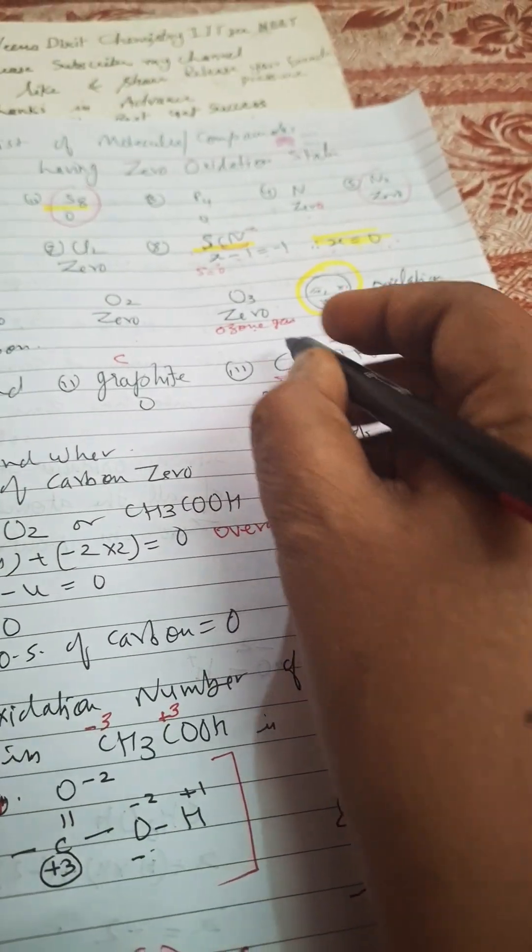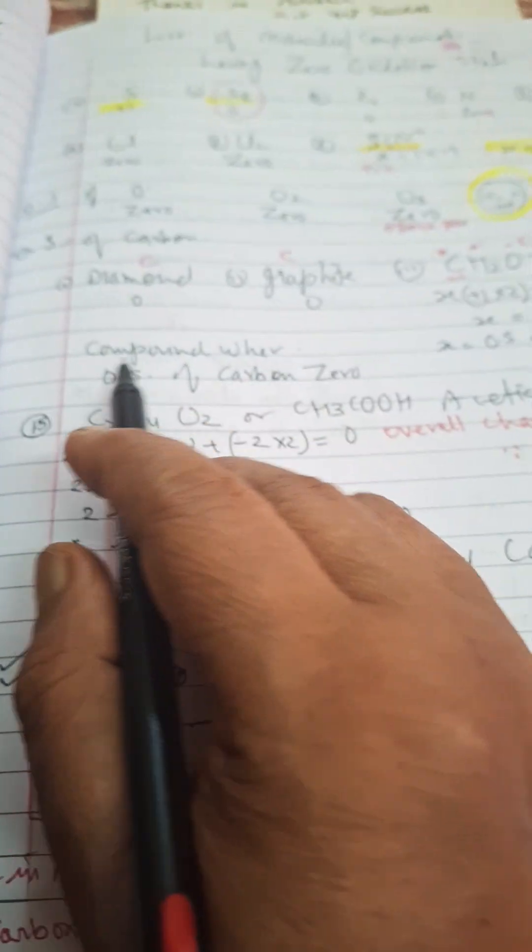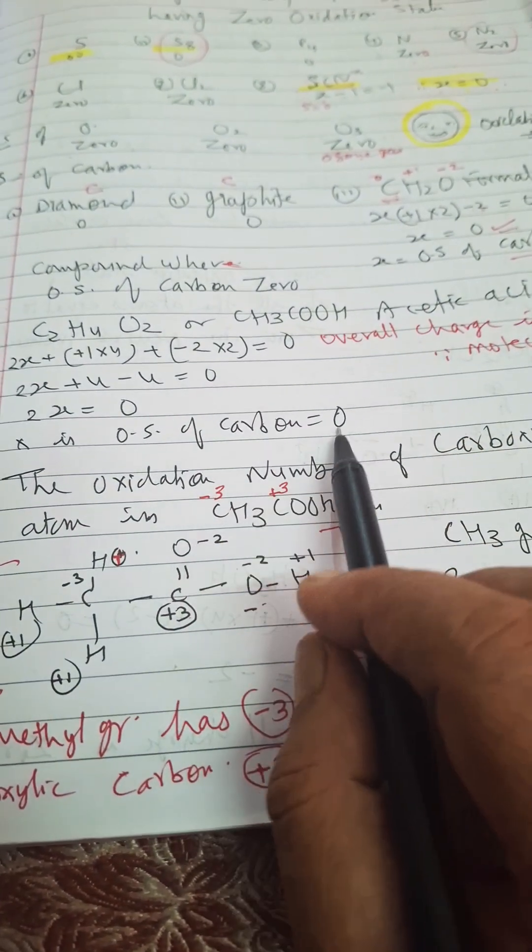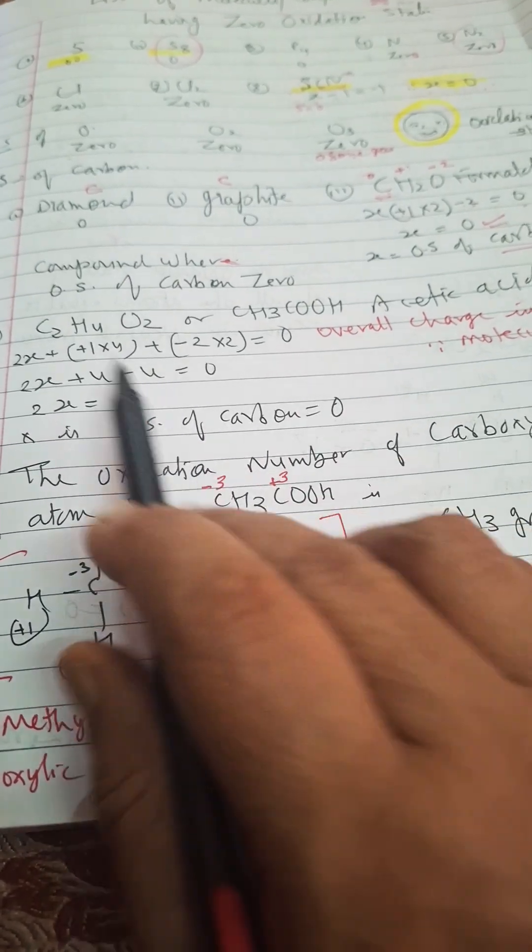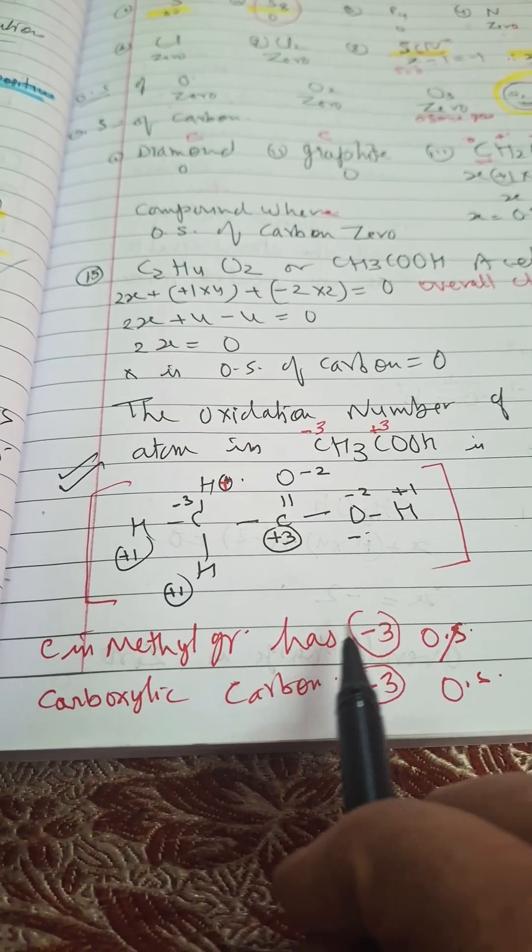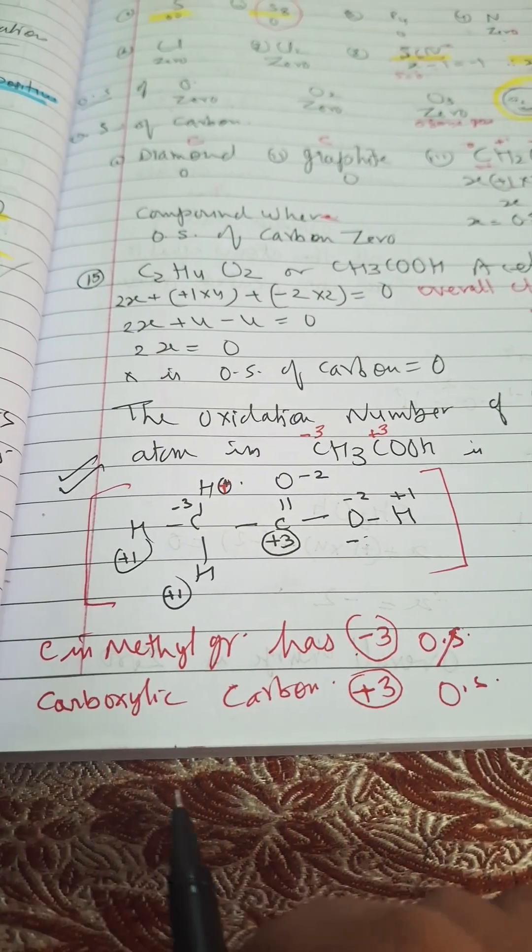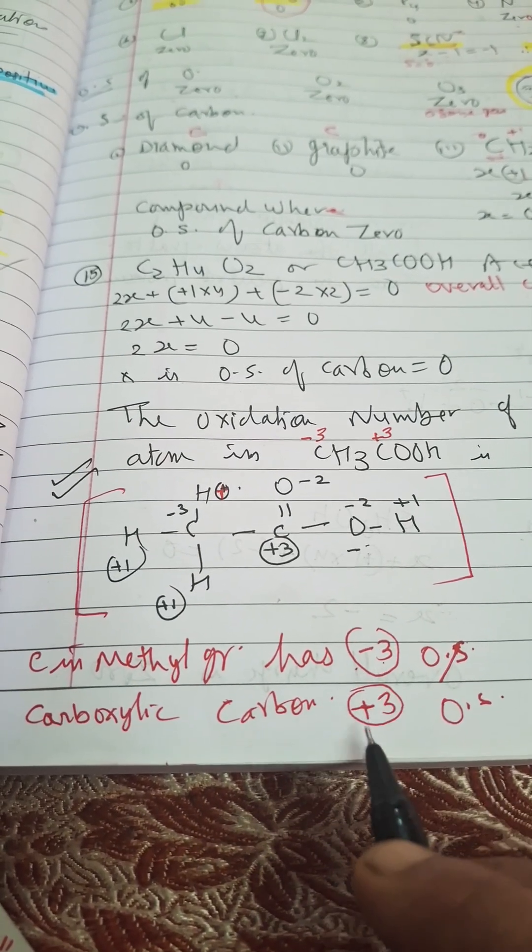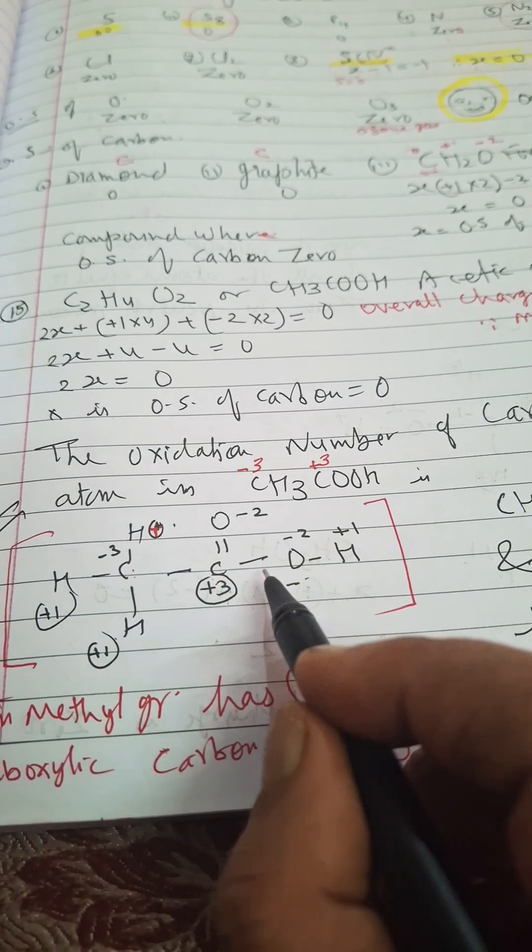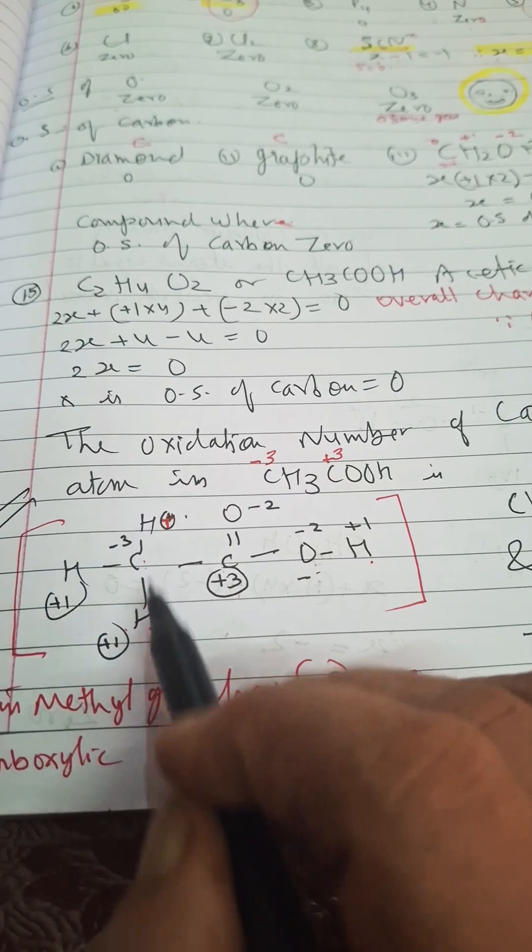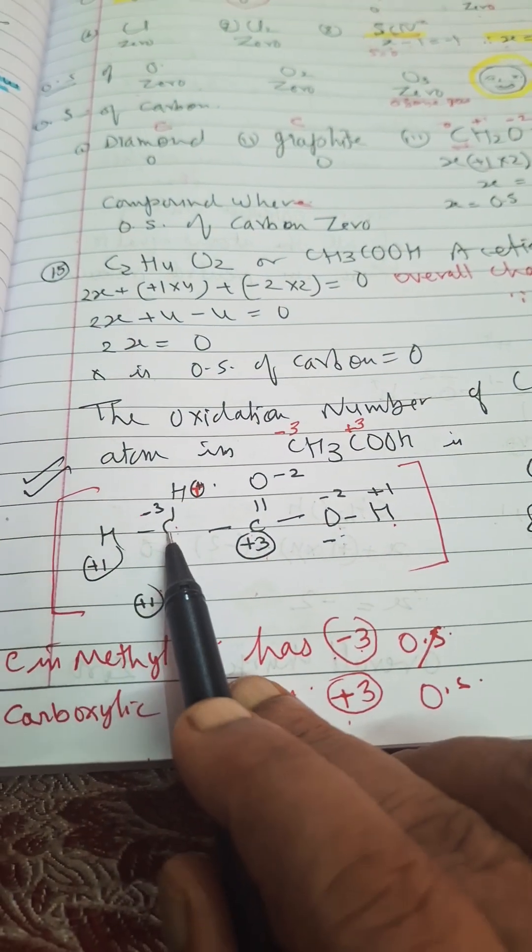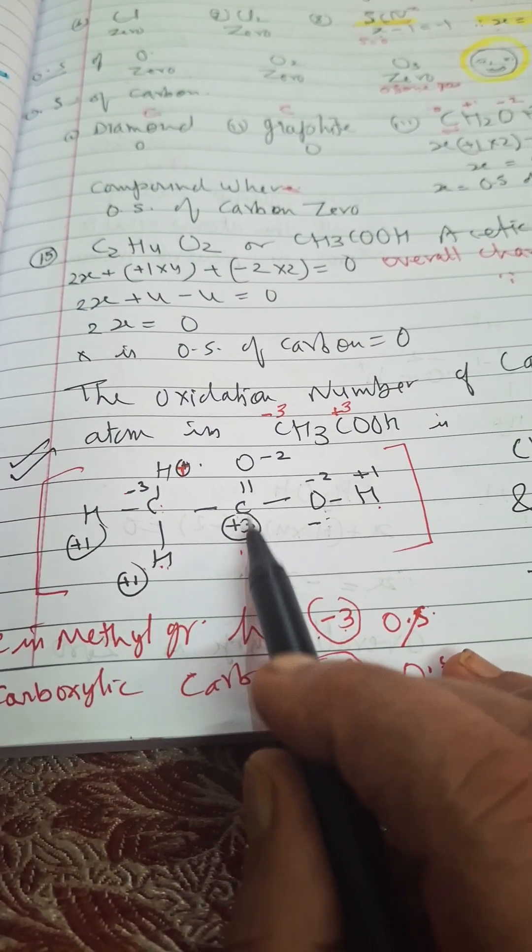Now compounds where oxidation state of carbon is zero, we have seen here. Acetic acid is also having zero oxidation state in carbon as a total. In computer exams they are asking carbon in methyl group has which oxidation state and carboxylic carbon has which high oxidation state. I have written minus three plus three here. See here, I write down like this: CH₃COOH. The hydrogen carries positive charge, so three hydrogens, four positive charges here. So this will have three negatives, so this carbon methyl carbon is having three negative charge.